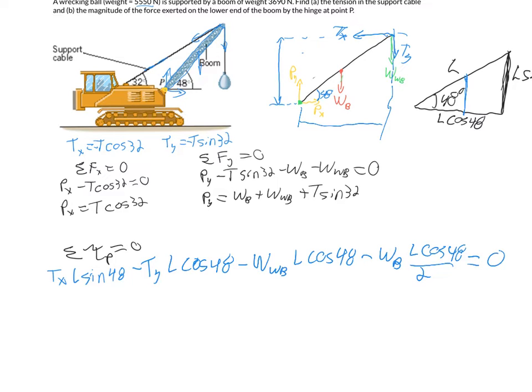So one problem some people run into with this one is like, wait a second. I don't know the length of the boom. We're not told that. So what we observe, though, is look, guess what? In this equation, the length is in all terms. I can divide through by the length of the boom. Those all go away. And in fact, let's go ahead and divide by the cosine of 48 as well to make things simpler.